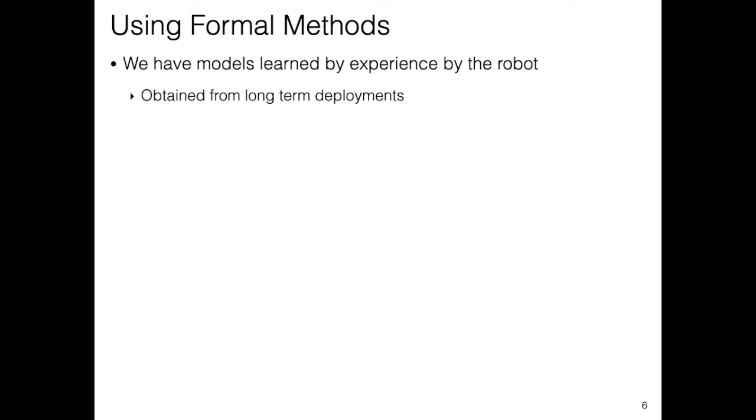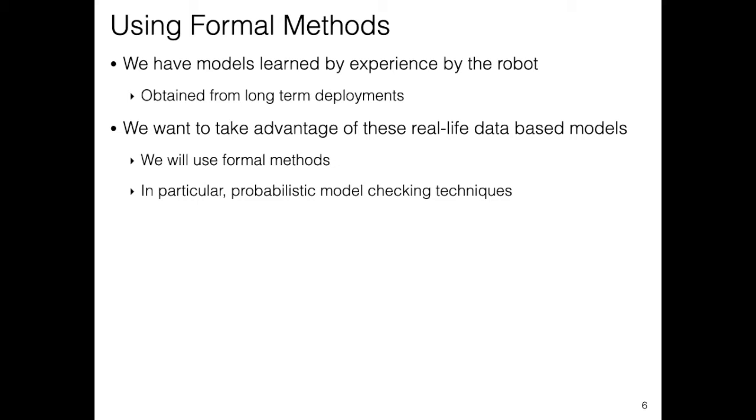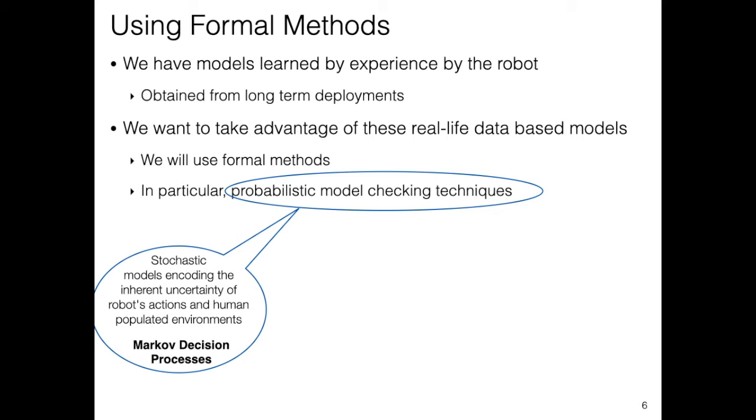So now we have these accurate models of robot execution based on real-life data, and we want to take advantage of them. To do so, we will use probabilistic model checking techniques. More specifically, we will use Markov decision processes as our decision-making model, due to its ability to tackle uncertainty.